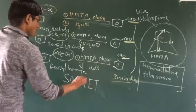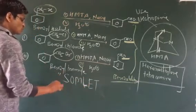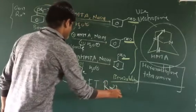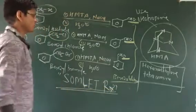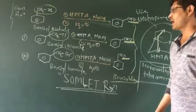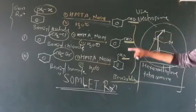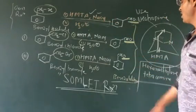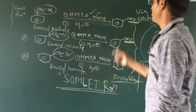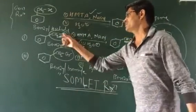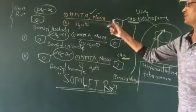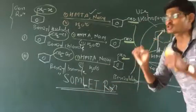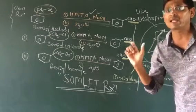Which reaction is this? Completely — this is the Sommelet reaction. Sommelet reaction: benzyl halide — benzyl chloride ka, benzyl bromide ka — what is formed? Benzaldehyde, by using HMTA (Hexamethylene Tetraamine), sodium hydroxide, hydrolysis in acidic condition. This type of reaction is known as the Sommelet reaction.